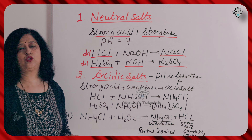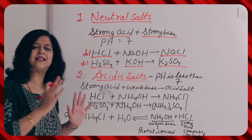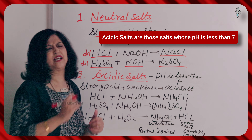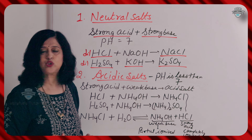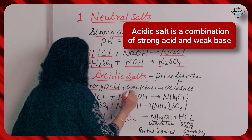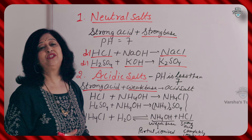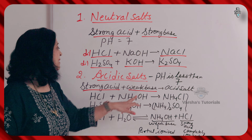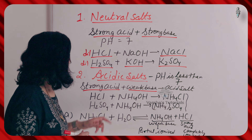Now let's look at acidic salt. It will be slightly acidic, meaning its pH value comes between 6 and 7 — less than 7. Acidic salt is formed from a combination of strong acid and weak base. The base is weak, so naturally the acid becomes dominant, making the salt acidic. A strong acid is completely ionized in water, while a weak base is only partially ionized. So it becomes an acidic salt.